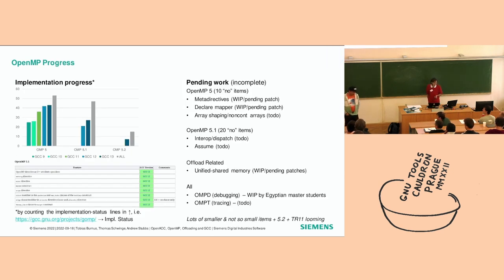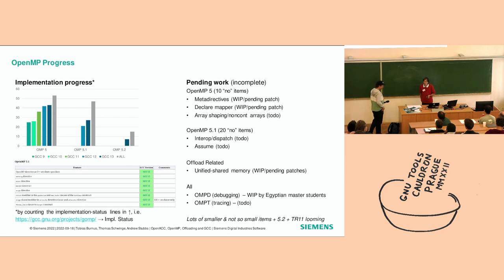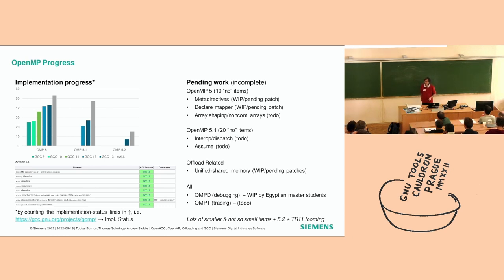Question from the audience: do we have any insight into how the features we implement are actually used? Are we chasing users or are they happily sitting on OpenMP 4.2 feature-wise? The response: it's a chicken-and-egg problem. A lot of main users have been sitting on 4.5. Many groups want support from all compilers before adopting a feature. If their favorite compiler supports something, they jump on it. My feeling is that OpenMP 5 has enough things that there's code which uses at least part of it.